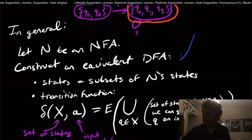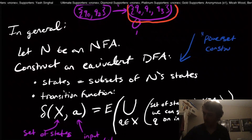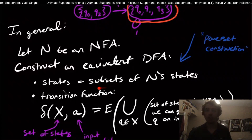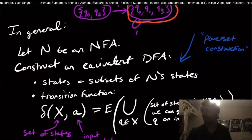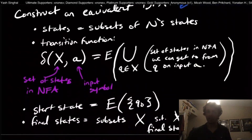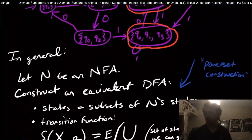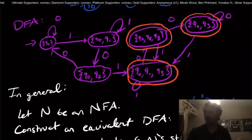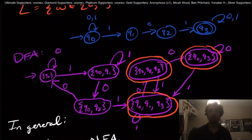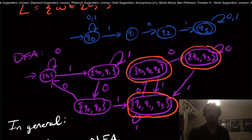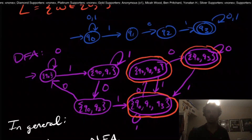This is why we call it the power set construction — because the states of the DFA are all the subsets of the NFA states, i.e., the power set of them. I hope that was interesting. Leave a comment below if you found a different way to do it or have an interesting NFA-to-DFA example. As always, like and subscribe — it really helps the channel grow. You can also support the channel via Patreon and our Discord link in the video description. I'll see you next time.